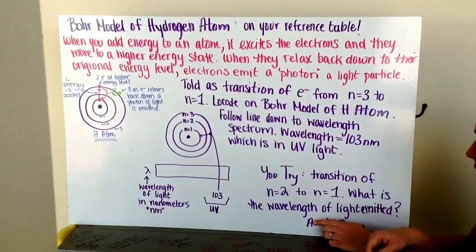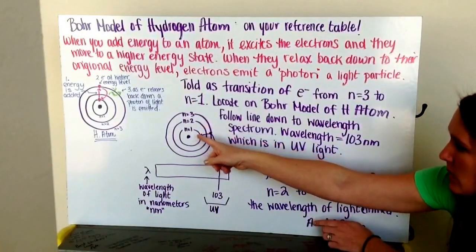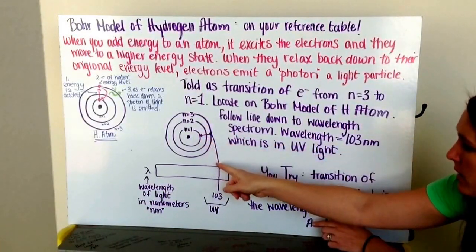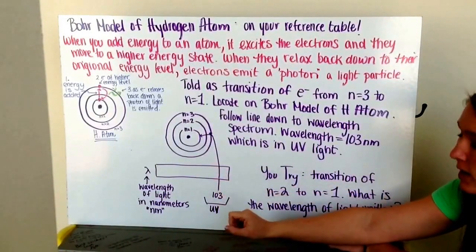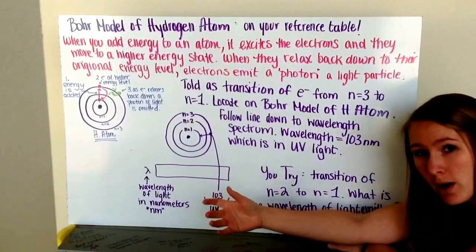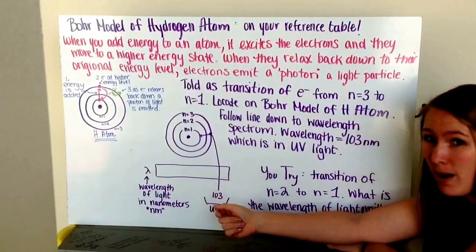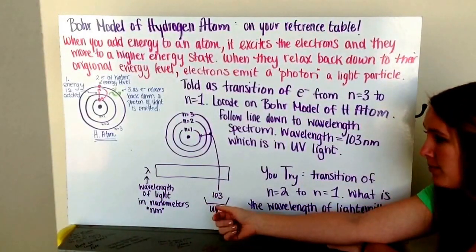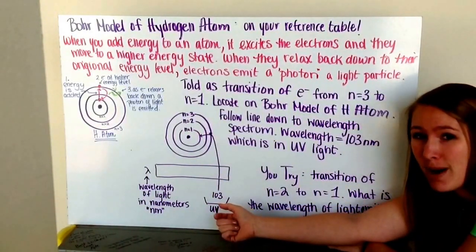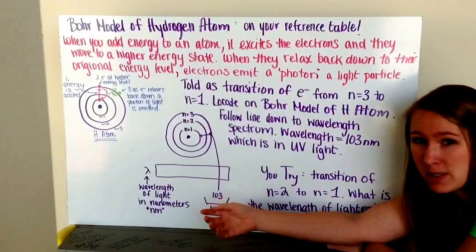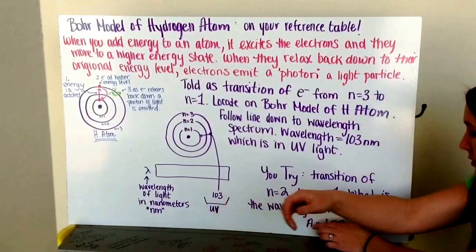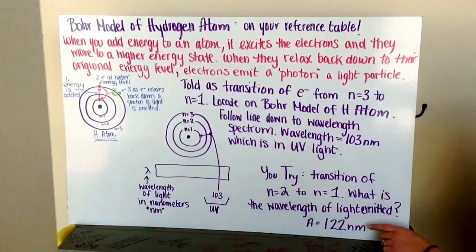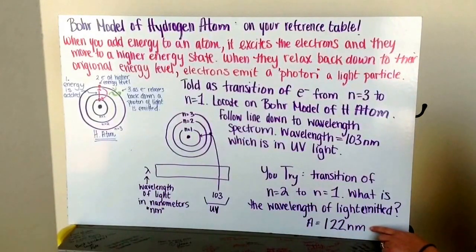So hopefully you've gone from n equals two to n equals one and followed that line down to determine what wavelength of light that gives off. And again, you're following this on your reference sheet where you have the Bohr model of the hydrogen atom. If you don't have that, that Bohr model is on our Blackboard site under the reference pages tab, right on the front page there for you. And you should determine that it gives off a wavelength of light equal to one hundred and twenty-two nanometers.